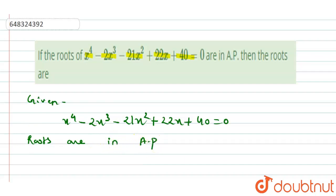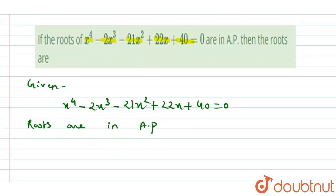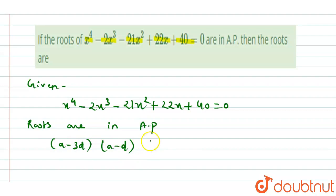Since the roots are in AP, we consider the four roots as a - 3d, a - d, a + d, and a + 3d.